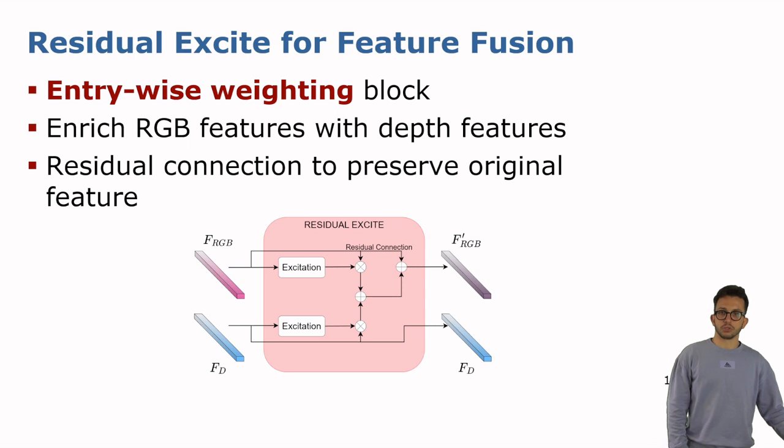Our feature fusion module, called residual excite, evolves from common channel attention fusion strategies such as squeeze and excitation and convolutional block attention modules. It consists of an excitation block, which is a sequence of convolutions that do not alter the dimension of the feature map so as to give weight to each entry of the input feature. This reweighting is then applied to the input features, RGB and depth respectively, and the reweighted features are eventually summed up together. A residual connection preserves the original RGB feature coming from the network. As seen in the image, this is only applied to the RGB feature. The depth feature is in contrast kept as it is. Basically, we are using depth features to enrich the RGB features and not vice versa.